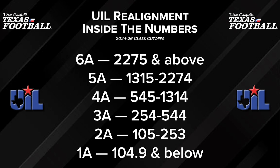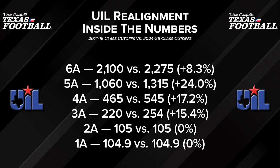I want to look back at what the cutoff numbers were 10 years ago and see where the biggest changes have come about. I calculated the percentage change in the cutoff for each classification. Look down at the bottom — nothing has changed in 2A and 1A, which is no surprise. That has held steady at about 105 students, and my guess is that's going to stay the same. If you're 105 and above you play 11-man; if you're under 105 you have the opportunity to play six-man.